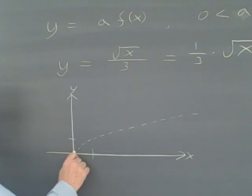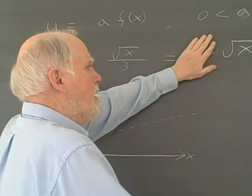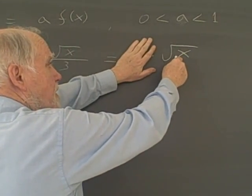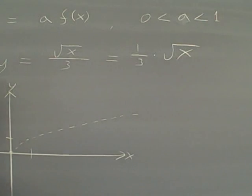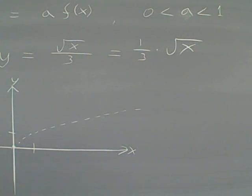Well, if I put 0 in, okay, I'll block out the 1 third. If I put 0 into just the square root of x, of course I get the square root of 0, which is 0. And if I multiply 1 third times 0, I still get 0. So these share this point. The square root of x and 1 third the square root of x share this point. But that's the only one they share.